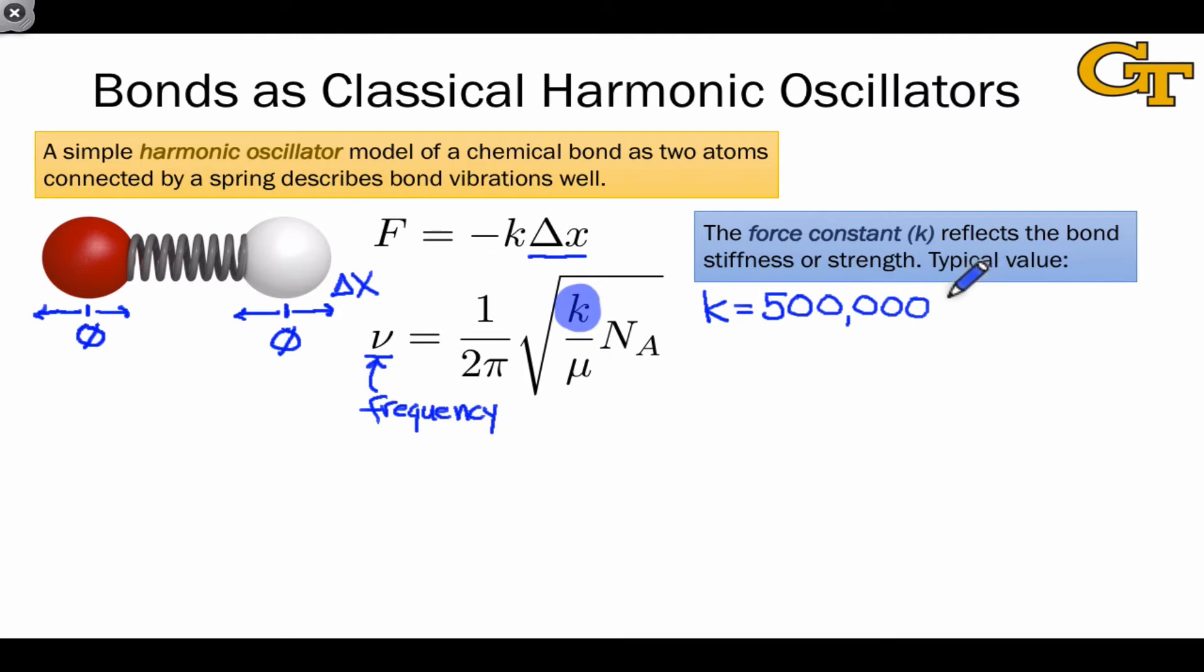And that value is 500,000 dynes per centimeter. You're probably unfamiliar with the unit dyne. A dyne is the gram centimeter equivalent of the newton. So where a newton is 1 kilogram meter per second squared, a dyne is 1 gram centimeter per second squared.